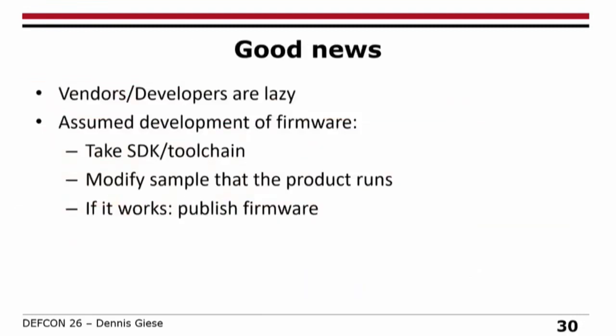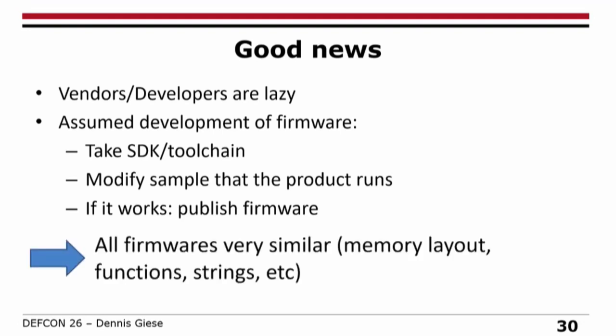One good news about the devices: the vendors are very lazy. What they do is take the SDK delivered by the chip manufacturer, modify some example that fits their case — like switching a GPIO — and as soon as it works, they just publish the firmware. For us, this is very good because the firmwares are more or less all similar: the memory layout is quite the same, the functions used for specific things are the same, log entries are also the same. So as soon as you know one device, you more or less have an idea of what's going on with other devices.